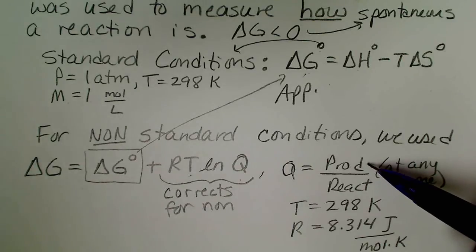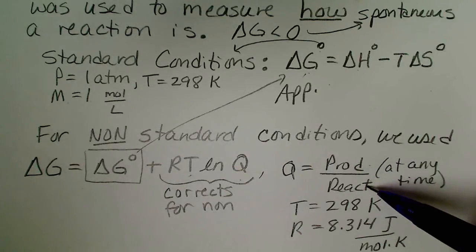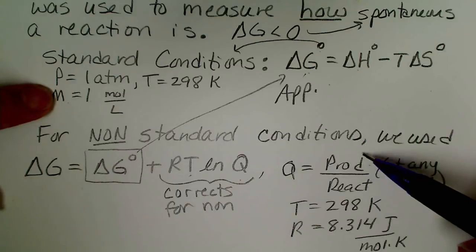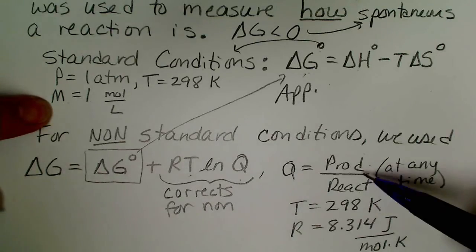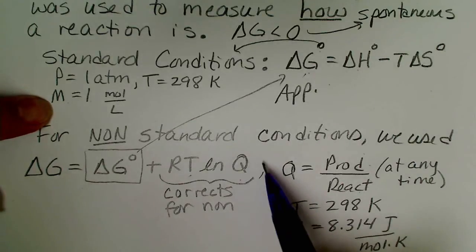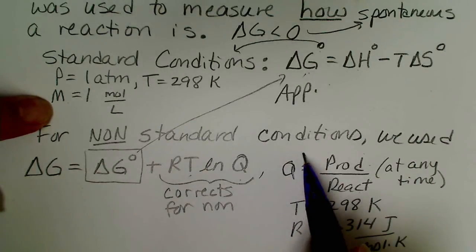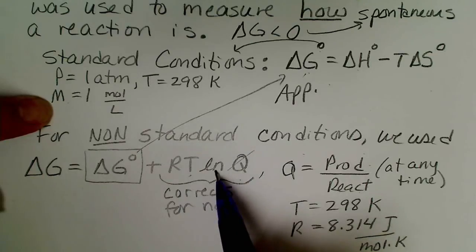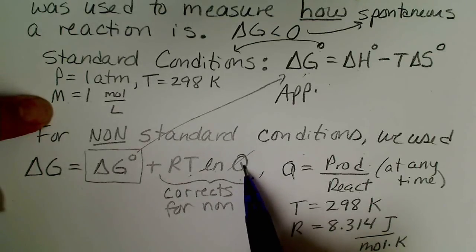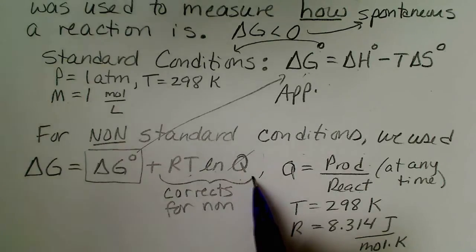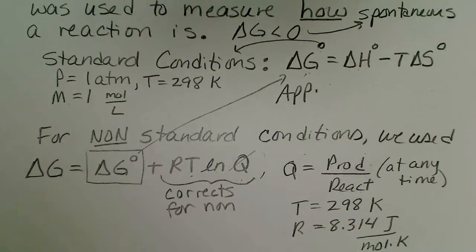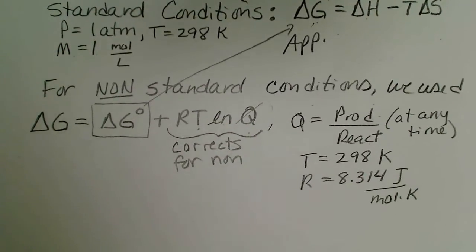So if our pressures or our concentrations were one molar then whatever the balanced equation was that we use to determine the value of Q, we would always have one raised to powers in the numerator and one raised to powers in the denominator. So Q would always be one at standard conditions, meaning the natural log or the log of one would make this entire term zero.